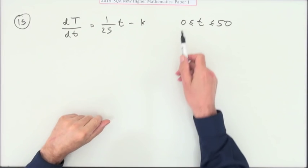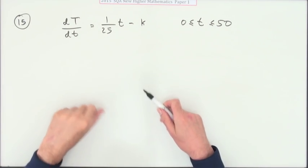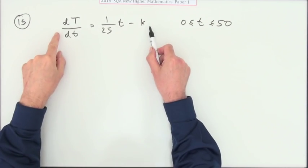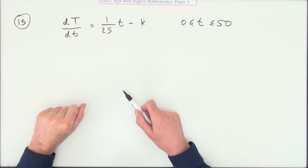Now number 15, the last question in paper one of the 2015 New Higher. This is a differential equation - this is the derivative of T, but you have to undo that, so you're integrating it.